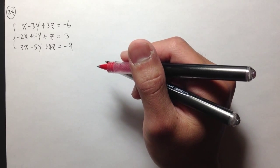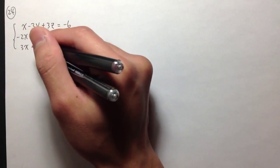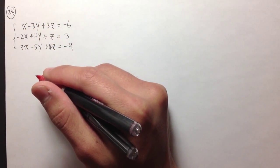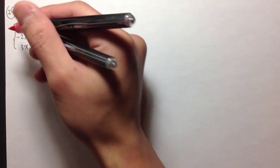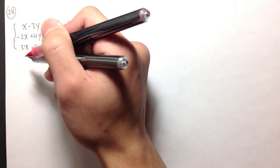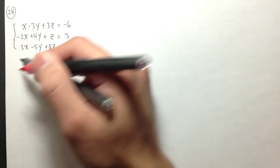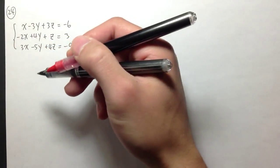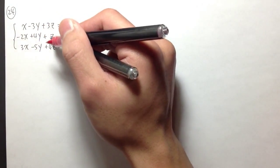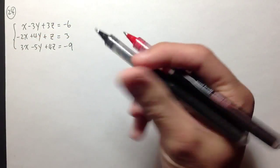To use the addition method, we need to first pick a variable and make them have the same coefficients. In this case, I would like to go with x, because I have 1, 2, and 3. These numbers are smaller than 3, 4, 5, 3, 1, and 4. So I would like to go with x.